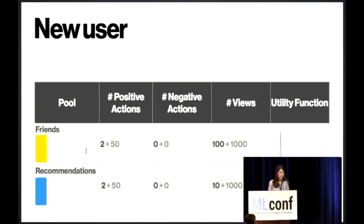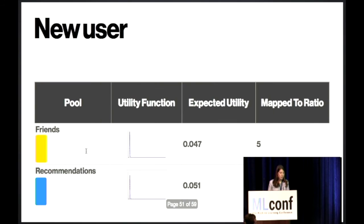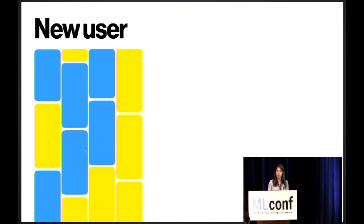Let's also look at a new user. This user has taken two actions on each type of content. They have a total of 100 views on friends content and 10 views of recommendations. And so they just have not been around much. And what we end up seeing is that their utility functions are very strongly dominated by the prior, as you'd expect. And their expected utilities are very, very similar. And so we map this to a ratio by multiplying by 100 and rounding. And what we end up with is a ratio of 5 to 5, which means we show half the content from their friends pool and half from their recommendations pool. And so this is what the new user's feed looks like.